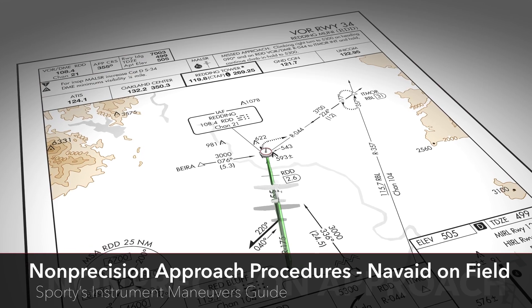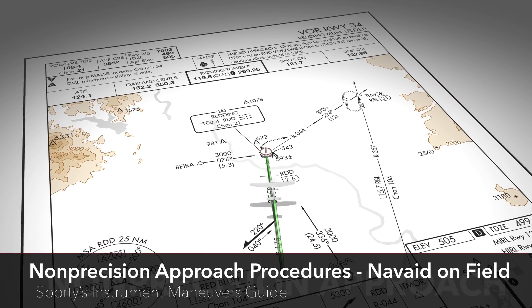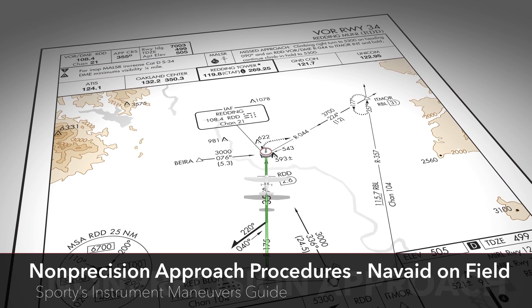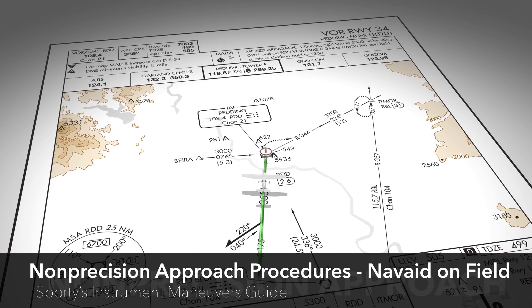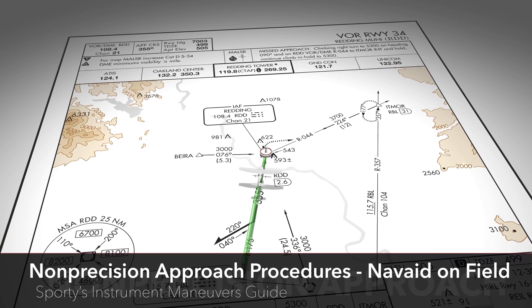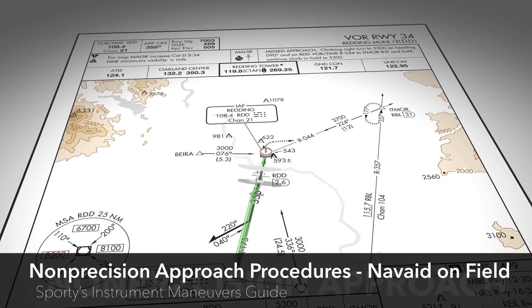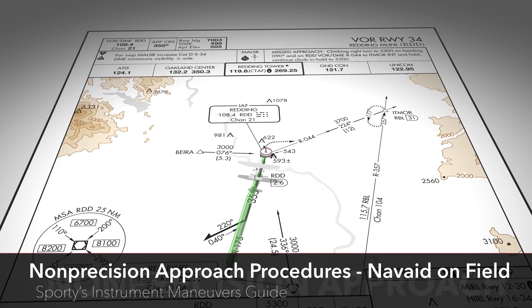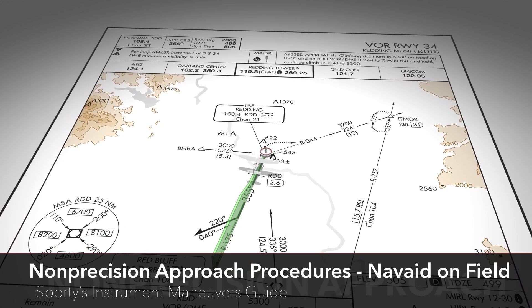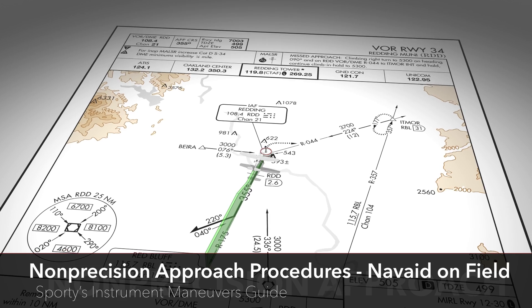Airports that have a VOR located on the field will typically have a non-precision instrument approach associated with that nav aid. The VOR is used for primary navigation during the approach.